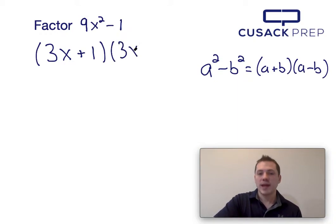So plugging in 3x for a and 1 for b into the right-hand side of this equation, I find that 9x squared minus 1 factors into (3x+1)(3x-1). And that's how you factor 9x squared minus 1 via the difference of squares. Thanks for watching.